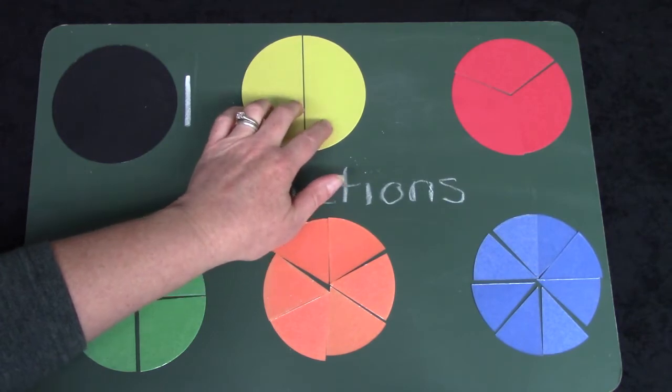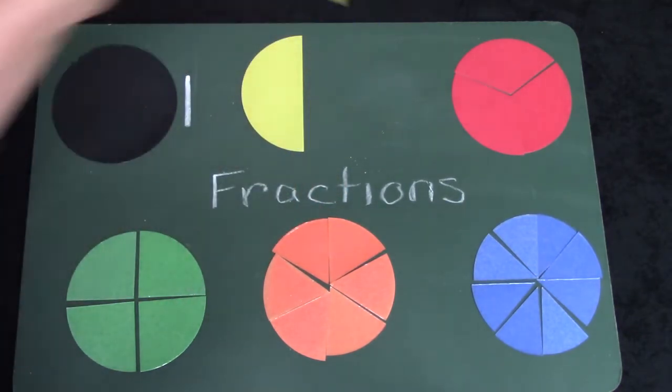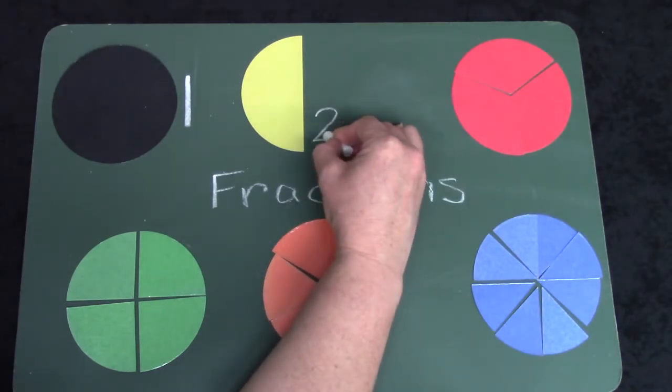This circle is split into two pieces. One, two. I would need two pieces to have a whole circle.